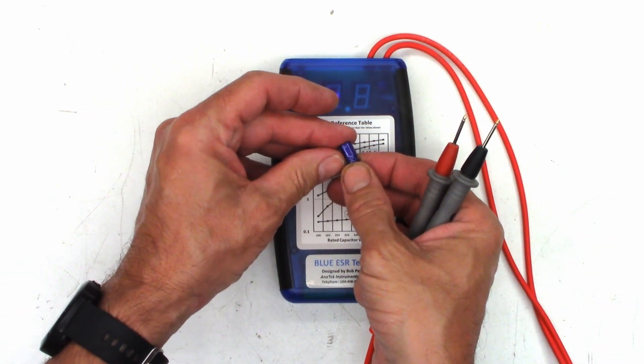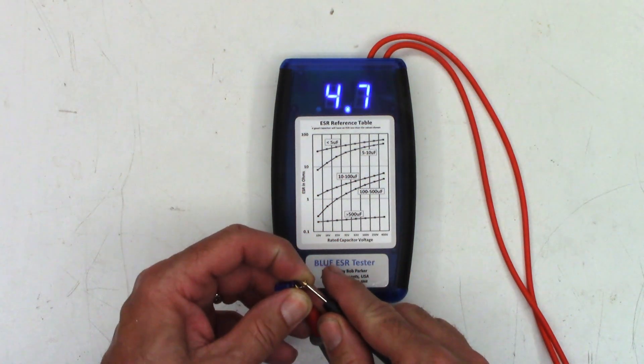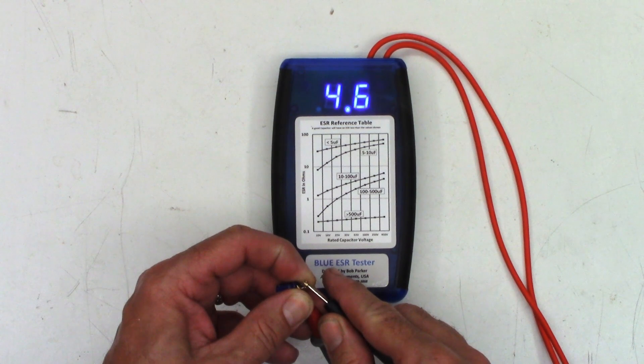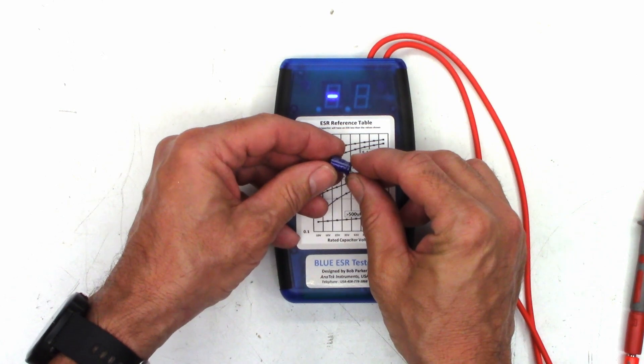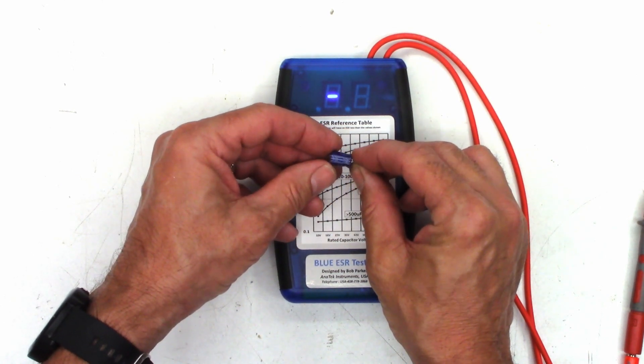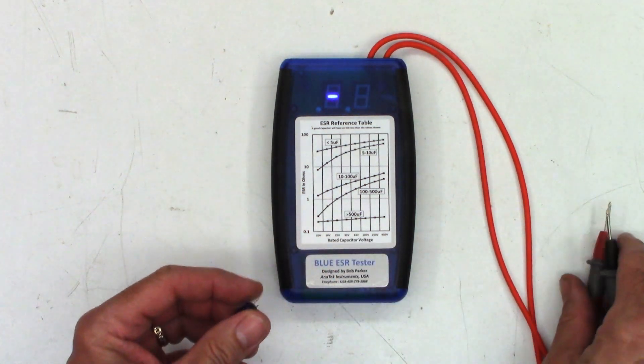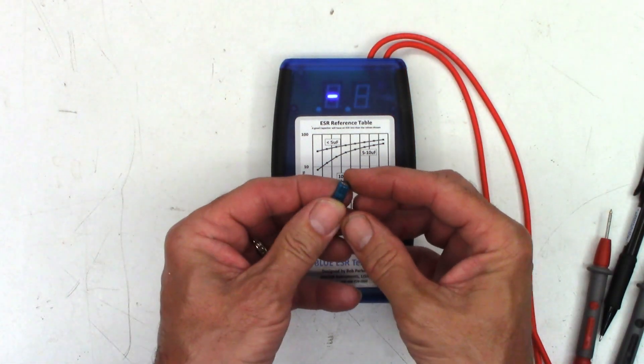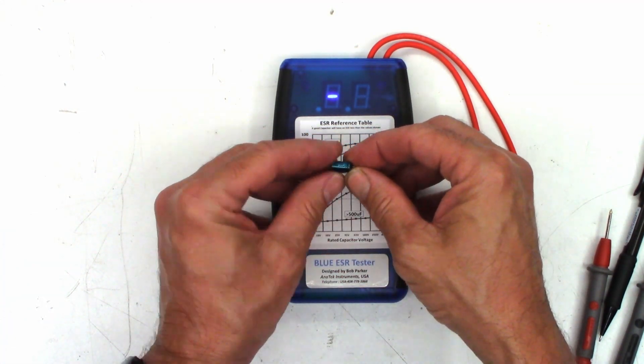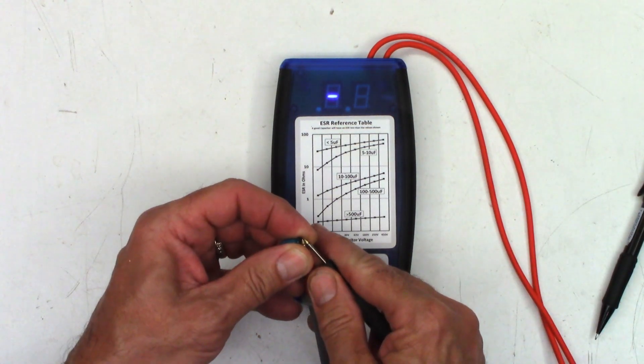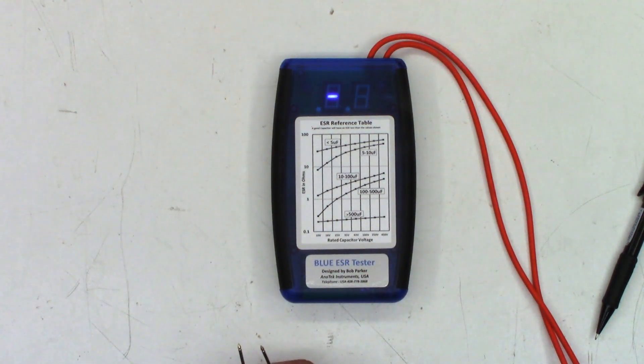Next is a Samwa, a 470 at 16 volts, 0.34 ohms on that guy. Now on to another Samwa, this one is a 100 at 50 volts, and I see 4.6, 4.7 ohms, I'll just call it 4.7. Now the last of these three Samwas, this is a 47 at 50 volts and I see 7.4 ohms on that one.